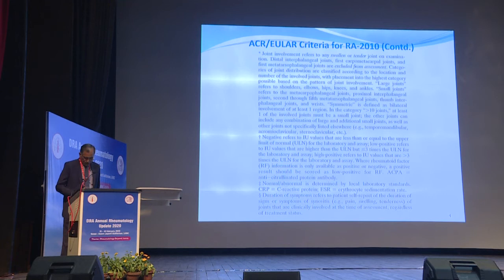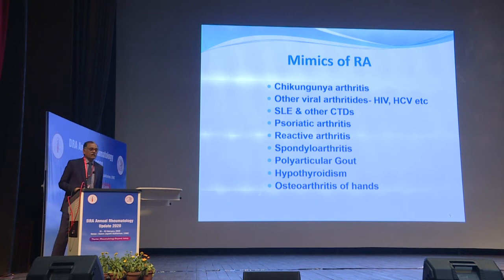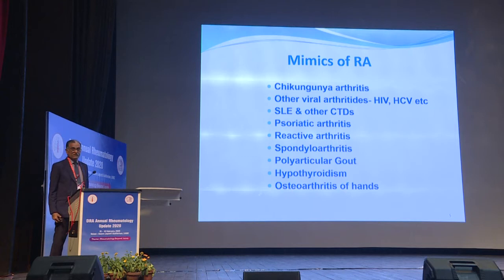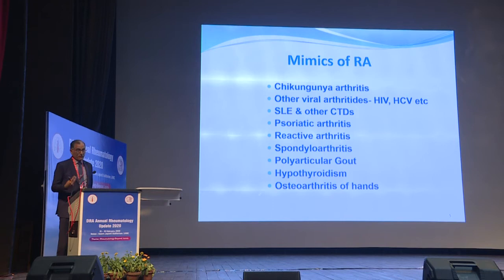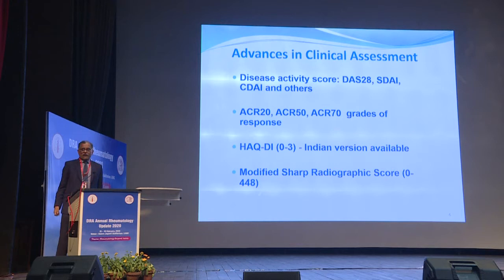It is important to remember this list of mimics of rheumatoid arthritis: chikungunya, other viral arthritis, lupus, other connective tissue diseases, psoriatic arthritis, reactive arthritis, spondyloarthritis, polyarticular gout, hypothyroidism, and osteoarthritis of the hands. Often you see patients being referred as cases of rheumatoid arthritis when actually it is osteoarthritis affecting the hands.